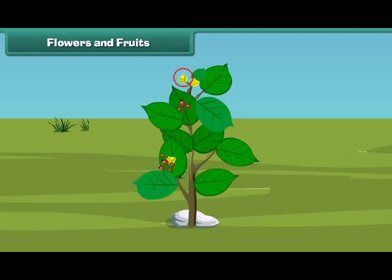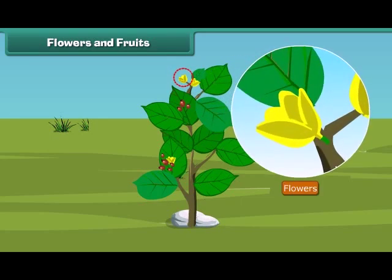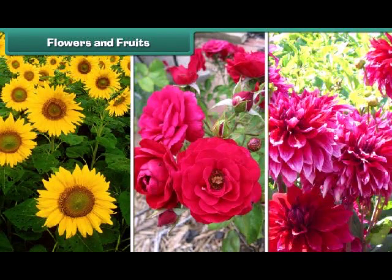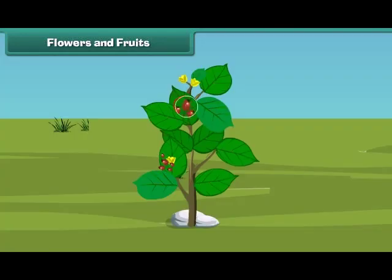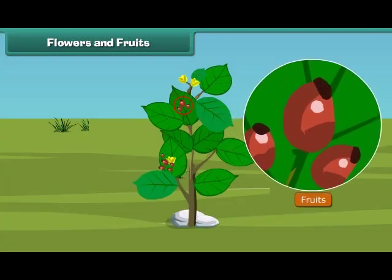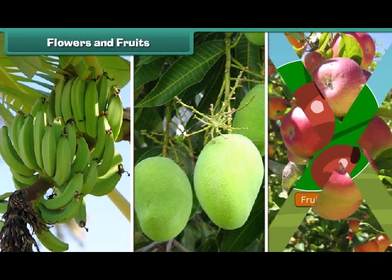Friends, now let us know about the most attractive and most beautiful part of the plant. Yes, that is the flower. Flowers are of different colors and types like sunflower, rose and dahlia and so on. Most of you also like fruits. Fruit is the juicy part of the plant. Fruits come in different shapes, sizes and colors like banana, mango, apple and oranges.